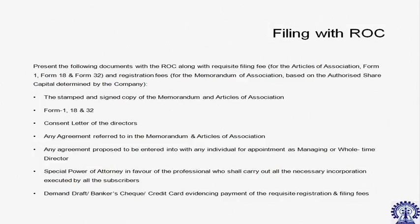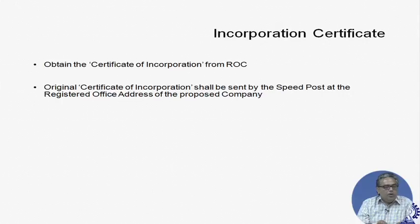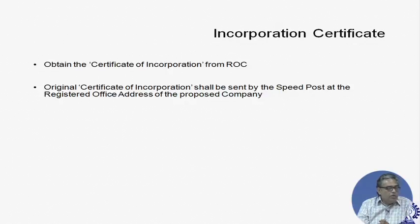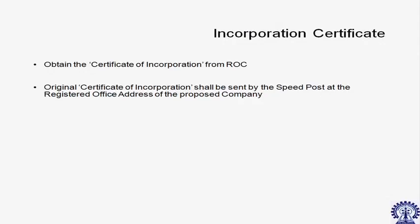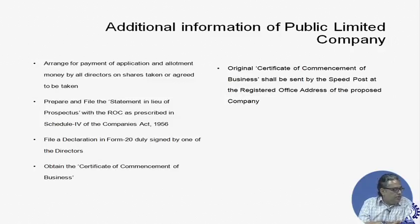Once you file all the documents, the Registrar will issue you an incorporation certificate. The incorporation certificate is generally sent by the Registrar to the registered office by speed post. Once your company receives the incorporation certificate, the date mentioned in the certificate is the date of your company's birth — this is an important date you will need to refer to in many compliance documents again and again.